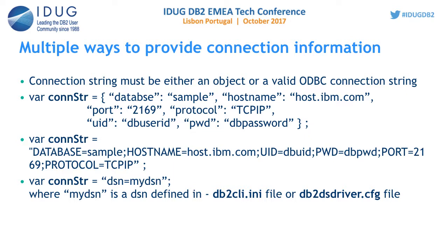The second form is the ODBC format of the connection string. In this format, you can use almost all DB2CLI.INI keywords. Whatever keywords are supported by the DB2CLI.INI file and you want to pass those attributes to the server, you can put them into this connection string.